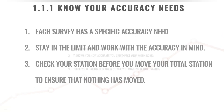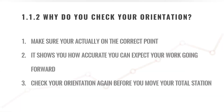Why do you check your orientation? The first reason is to make sure you're actually on the correct point. The second is that it shows you how accurate you can expect your work to be going forward. For example, if you do a check and you're out by 30mm, you can't guarantee work with higher accuracy than 30mm. But if you check and you're only 2mm out, you can guarantee that your work going forward is accurate to about 2mm.